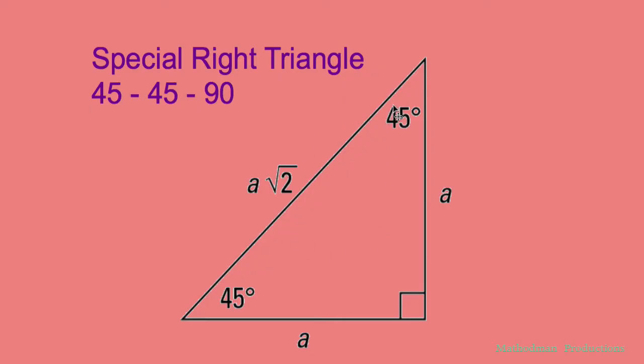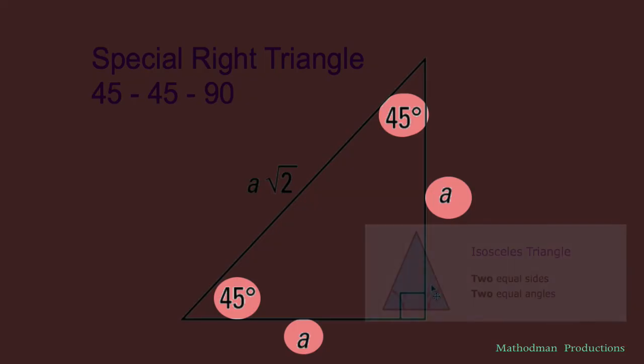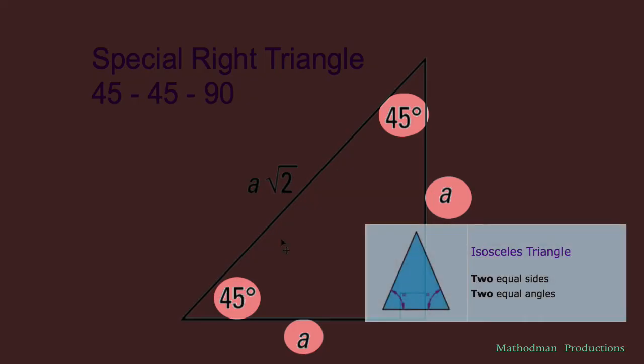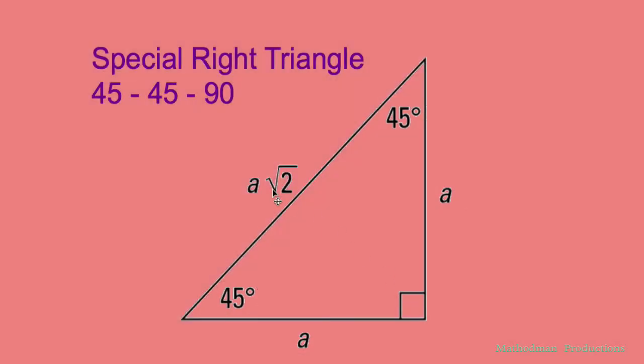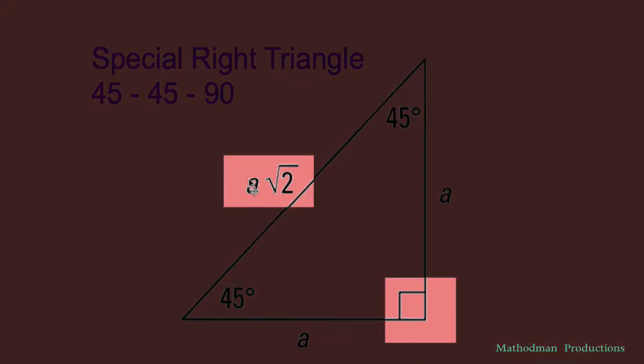Let's say the one across 45 is A. Then it's an isosceles triangle because these angles are the same, meaning the two legs are going to be the same, so the other one's also going to be A. And the one across 90 degrees can be found by doing A times the square root of 2.